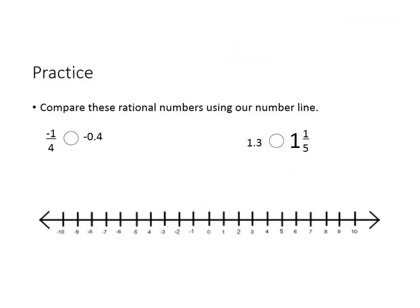Now let's use this number line to compare the rational numbers. Negative 1 fourth we decided was negative 25 hundredths, and negative 4 tenths is past it on the number line. So negative 25 hundredths is actually worth greater value than negative 4 tenths. Then we have 1 and 3 tenths approximately here, and 1 and 20 hundredths here. 1 and 3 tenths is greater because it's farther to the right on the number line.